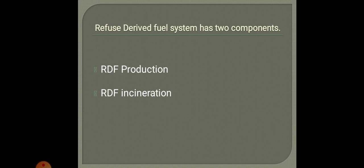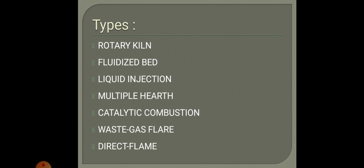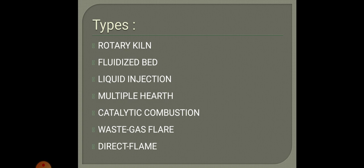The broader classification covers incinerators based on purpose, number of chambers, and technology. The different types commonly used are: rotary kiln, fluidized bed, liquid injection, multiple hearth, catalytic combustion, waste gas flare, and direct flame incinerators. Among these, the rotary kiln, fluidized bed, and liquid injection are the most prevalent in industry because of their applicability to a larger scale and their versatility.